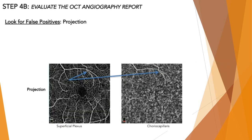Another culprit for false positives is the projection artifact — a mirroring or duplication of vessels from the superficial plexus onto the choriocapillaris slab. If you just looked at the choriocapillaris slab, you might suspect neovascularization, but what you're really seeing is a projection artifact from the superficial layer. Always check the anterior slab to make sure large vessels running through lower slabs aren't projection artifacts.